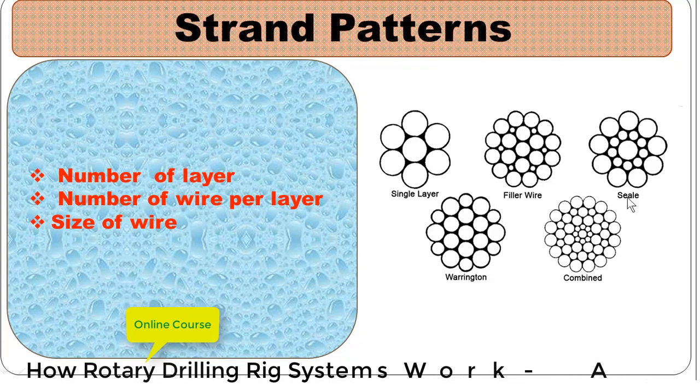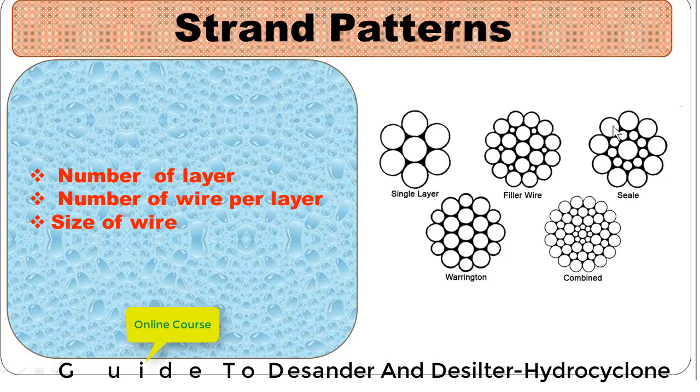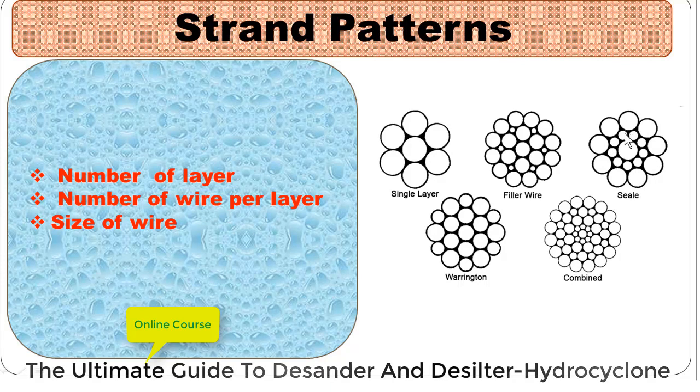Seal strand pattern: there are again two layers of wires. We have the same number of wires in the inner layer and outer layer, but the inner layer wires are smaller in size compared to the outer layer.